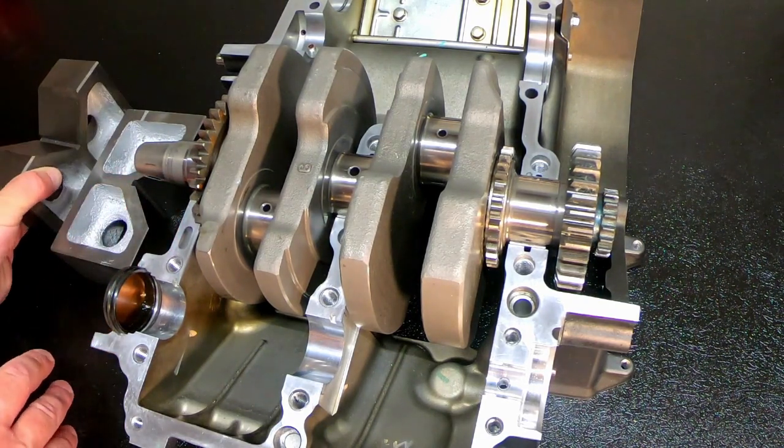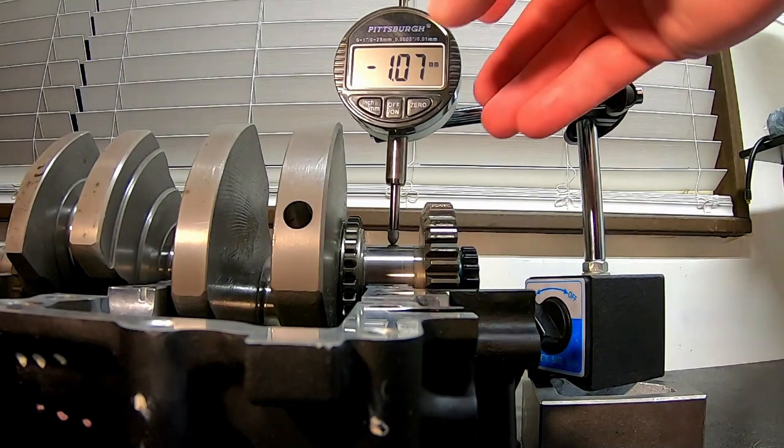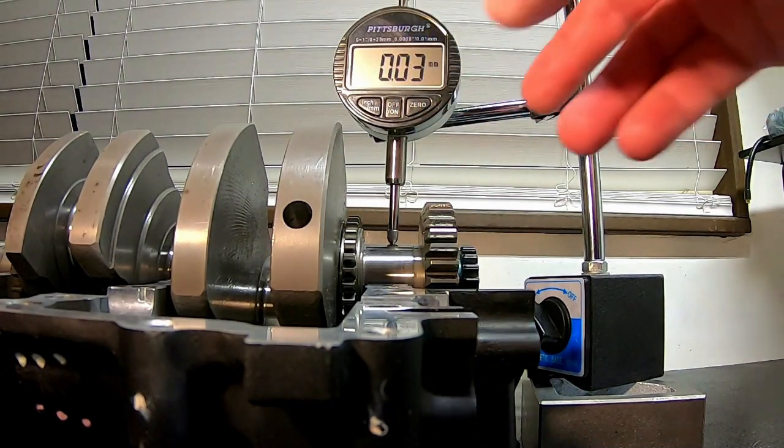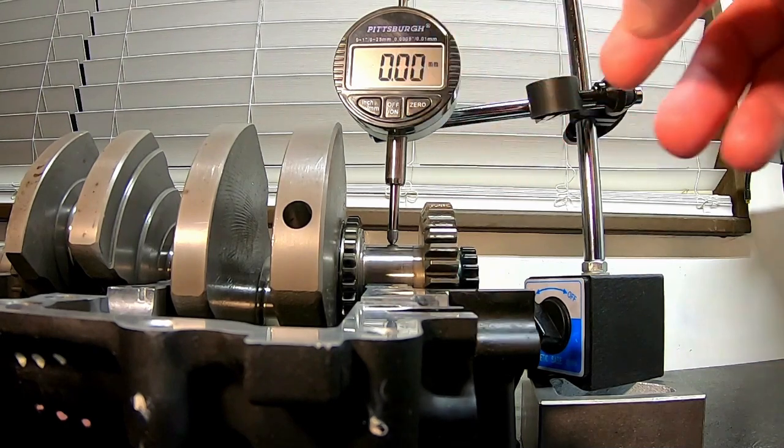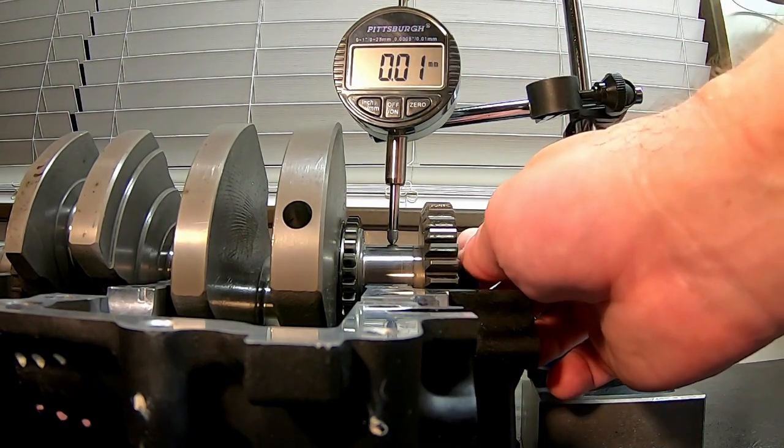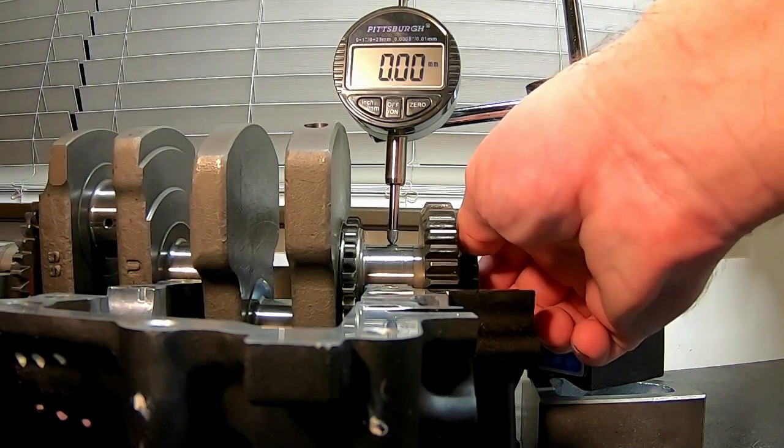Then we're going to set up the dial indicator. The apparatus on this makes it kind of tough to zero out because every time you press the button it moves. So we're starting at 0.01—just keep that in mind—and it drops to 0.00.